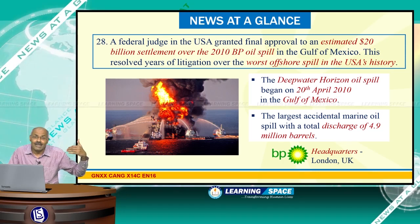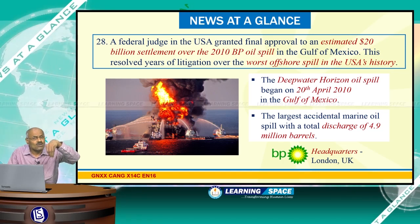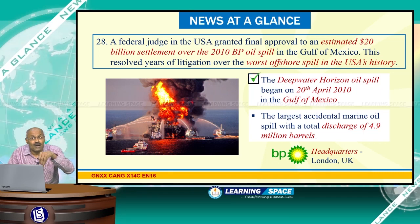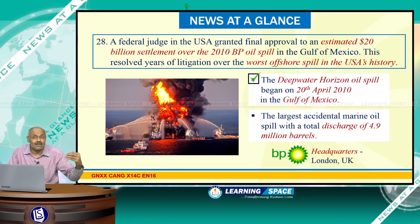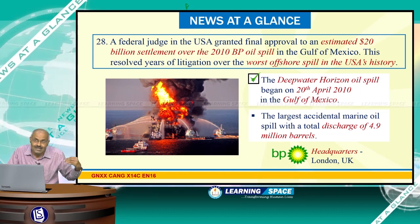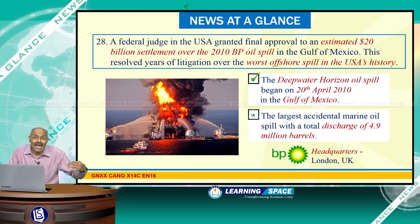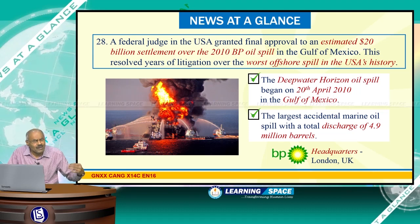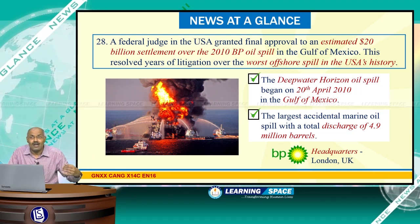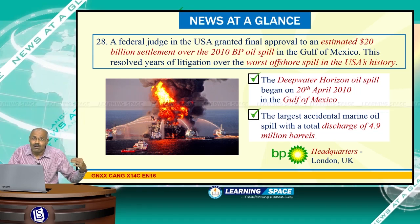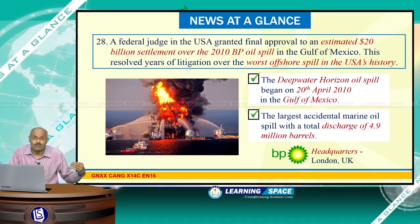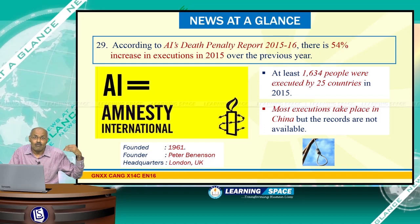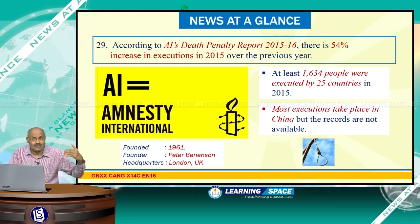A federal judge in the United States granted final approval to an estimated 20 billion dollar settlement over the 2010 BP oil spill in the Gulf of Mexico. The Deepwater Horizon oil spill began on 20th April 2010 and is the largest accidental marine oil spill, with a total discharge of 4.9 million barrels. BP (British Petroleum) is headquartered in London, UK, and the court ordered the 20 billion dollar settlement because of BP's lapse in 2010.